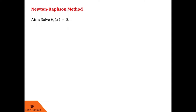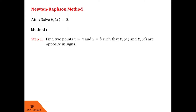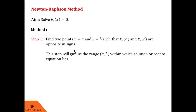In step 1, we find two points, say x = a and x = b, such that Pn(a) and Pn(b) are opposite in sign. This step gives us the range or interval [a, b] in which the solution or root of the equation lies.